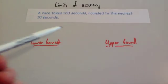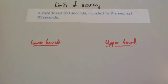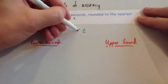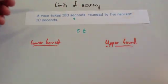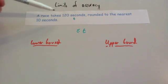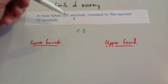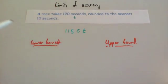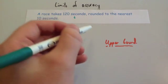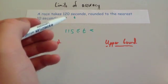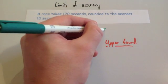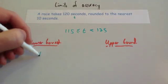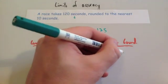A race takes 120 seconds to complete, rounded to the nearest 10 seconds. If we call the time taken T, the time is bigger than or equal to 115, since 115 is the lowest value that rounds up to 120. So the lower bound is 115. The upper bound is 125 — it can't be 125 itself, but anything below 125 will round down to 120. So the lower bound is 115 and the upper bound is 125.